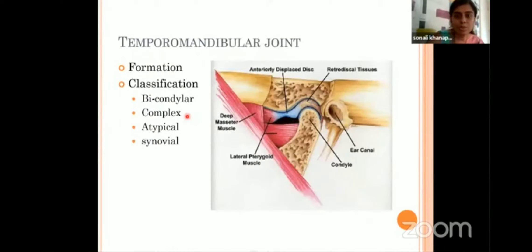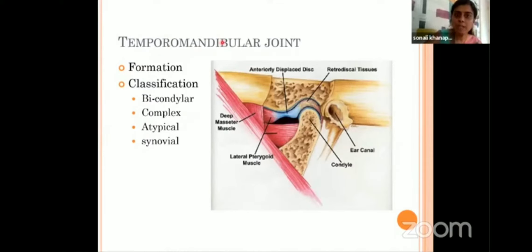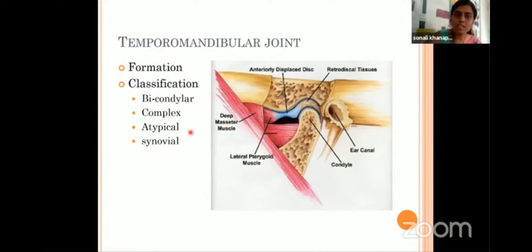Coming to the temporomandibular joint — extremely important. You might get a long note on TMJ, a short note, or MCQs on it. As the name itself is self-explanatory, it is a joint between the temporal bone and mandible — more specifically, it is a joint between the mandibular fossa of the temporal bone and the condyle of the ramus of mandible. How we are going to classify? There are four classification points to see.